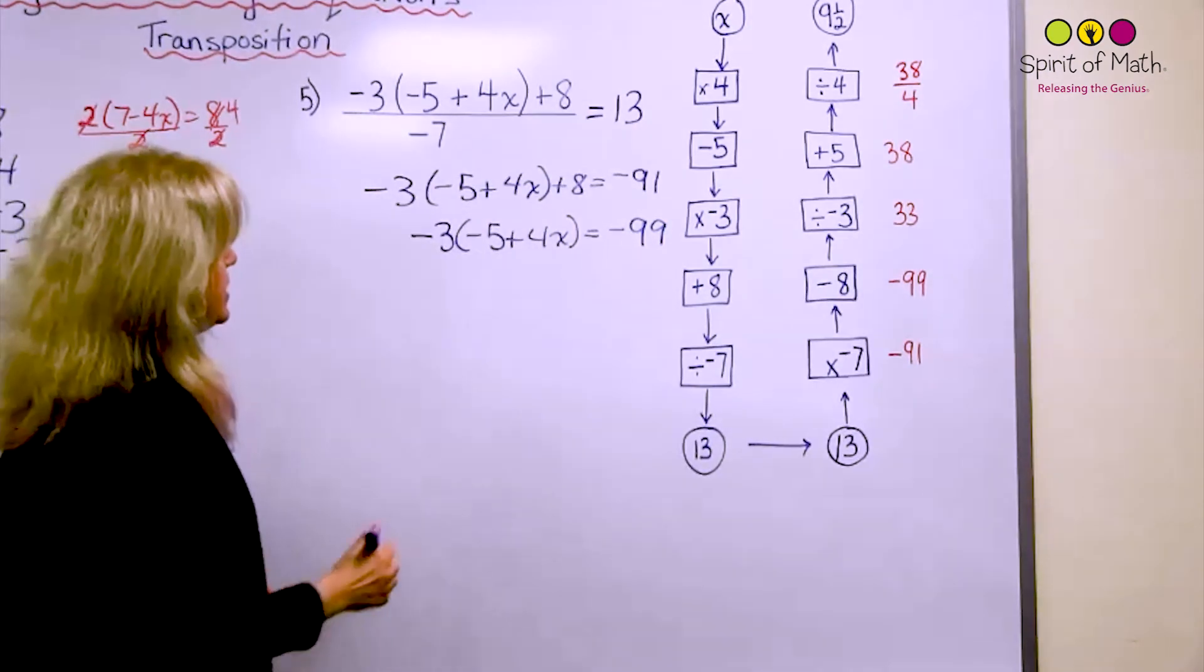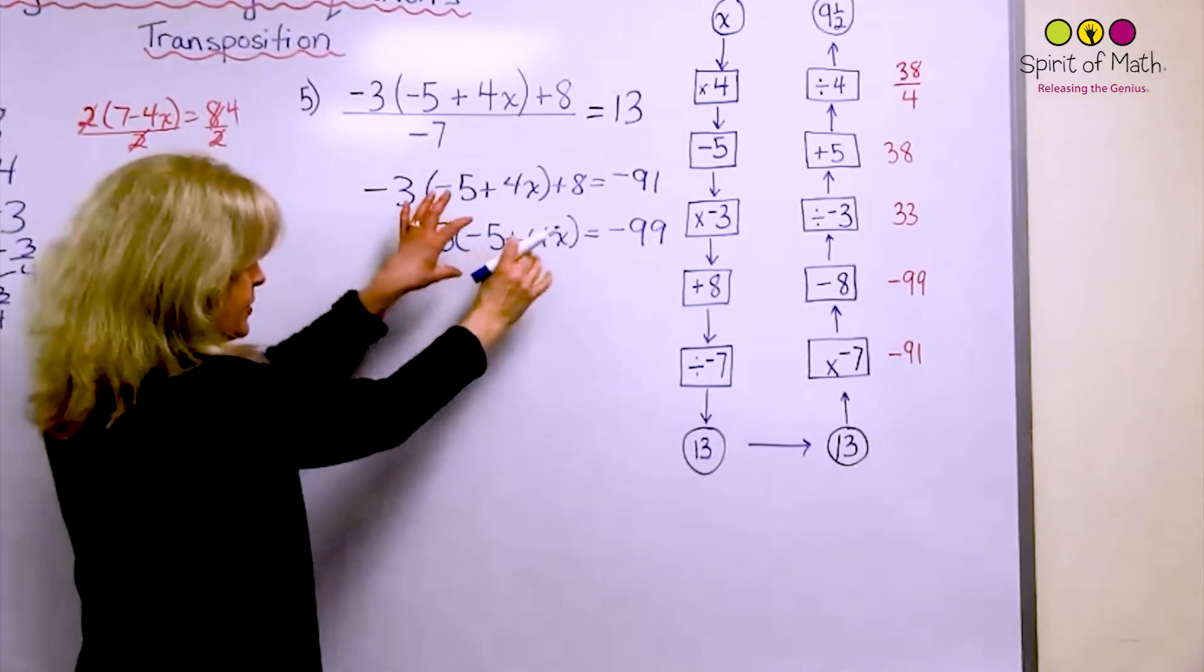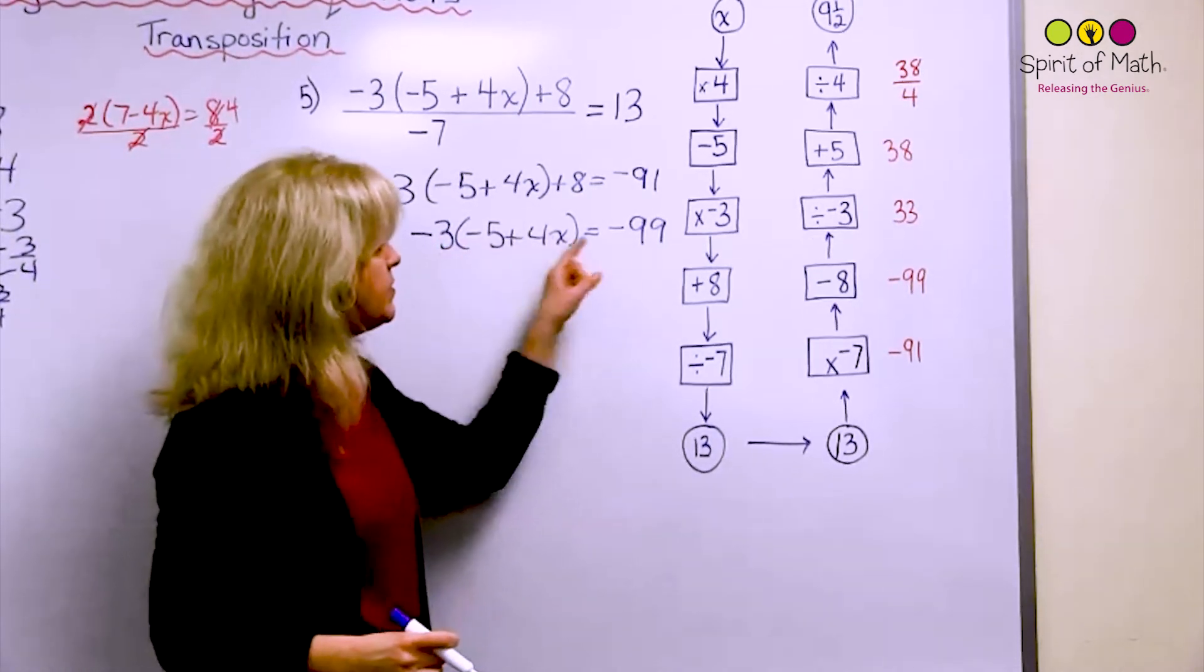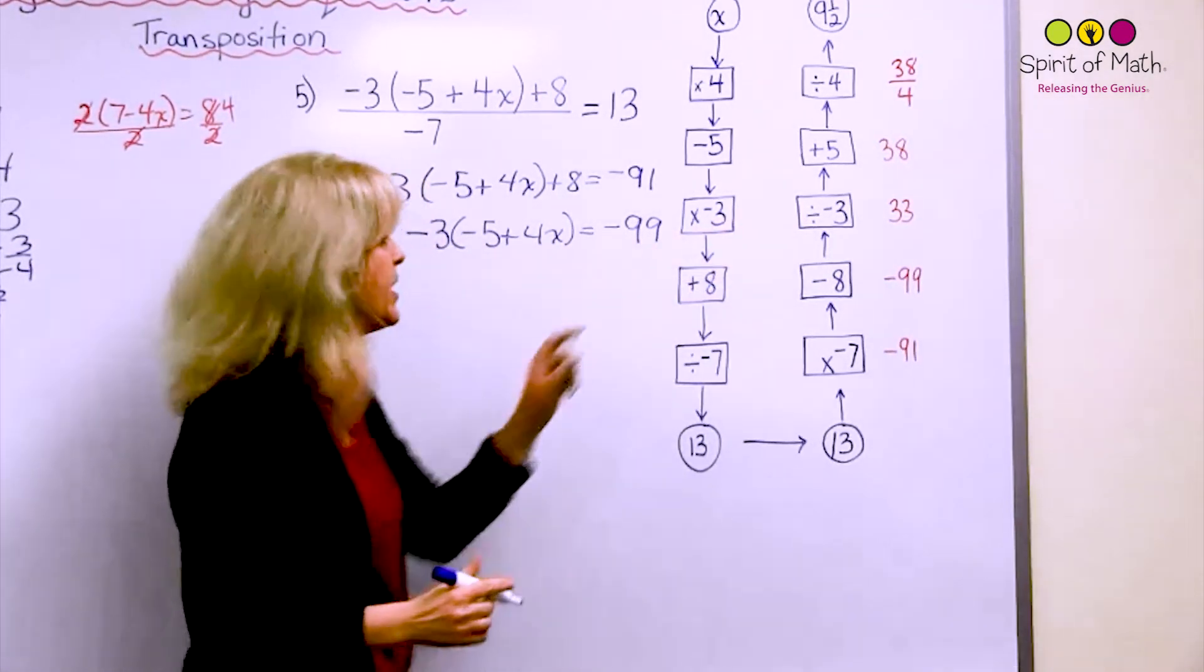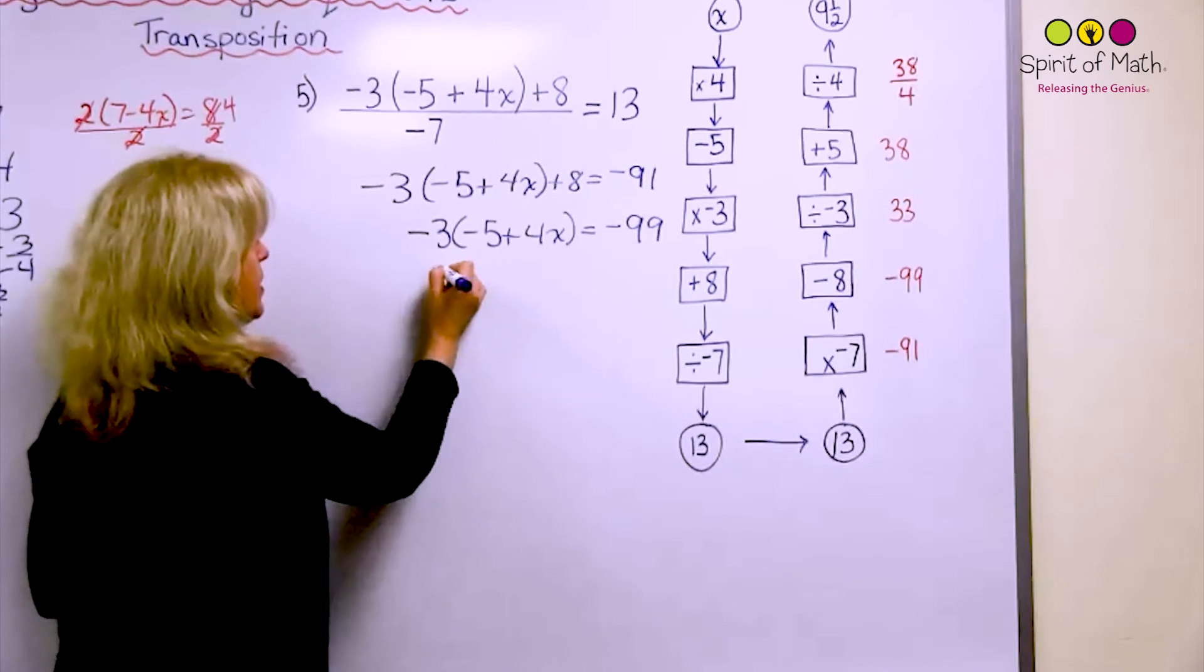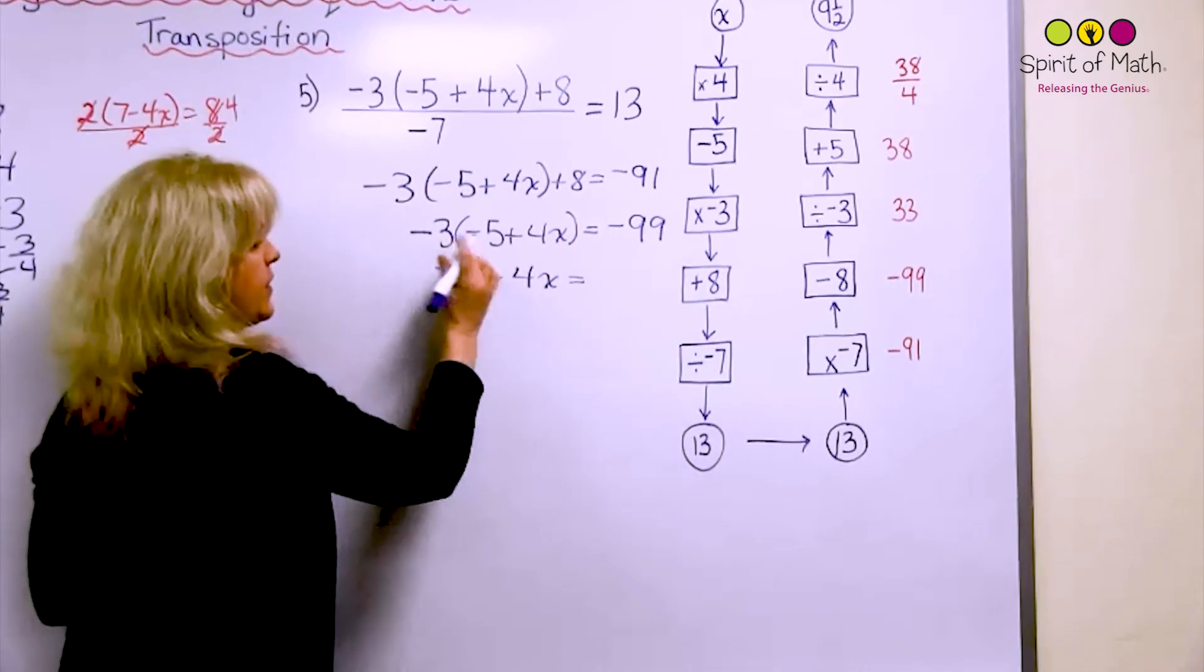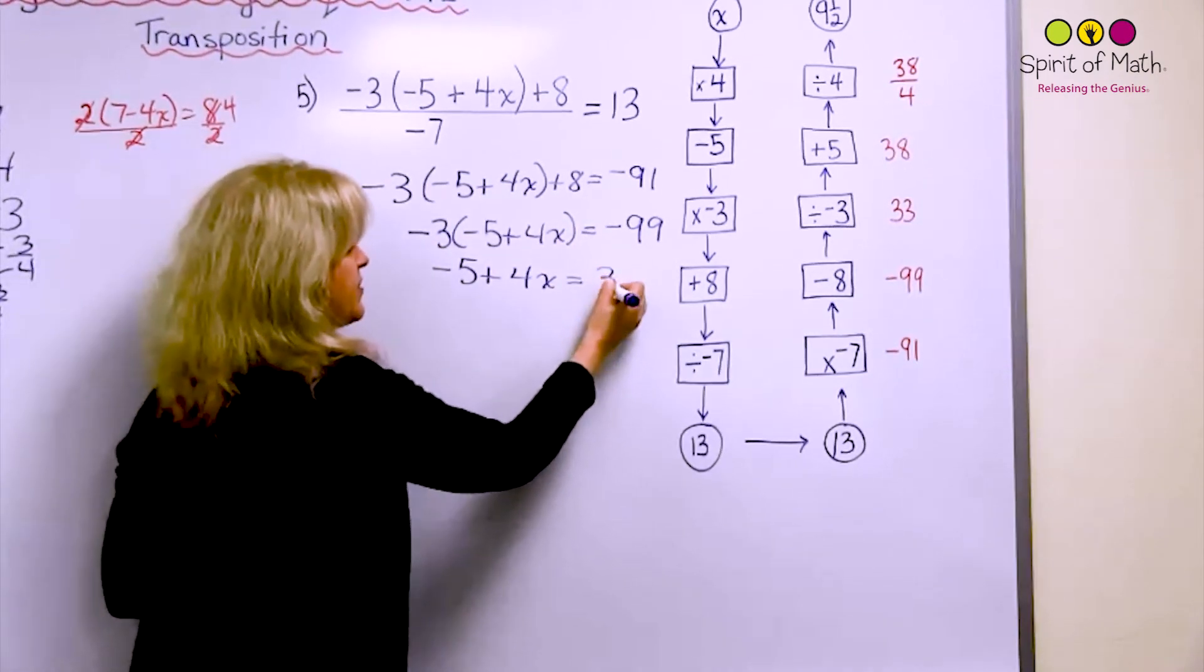And now when you get to the next step, and it says that the furthest away again from the x is times negative 3, and the opposite of times negative 3 is divided by negative 3, which is what you had here. So you have negative 5 plus 4x equals negative 99 divided by negative 3, which is 33.